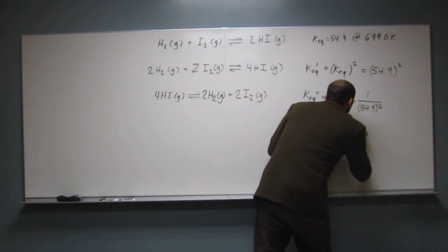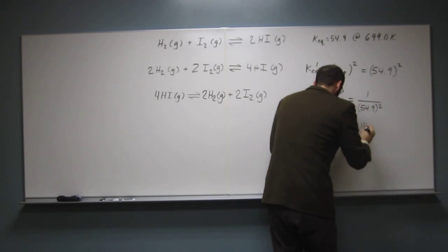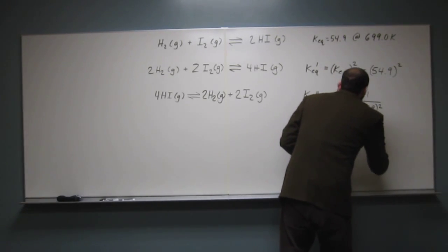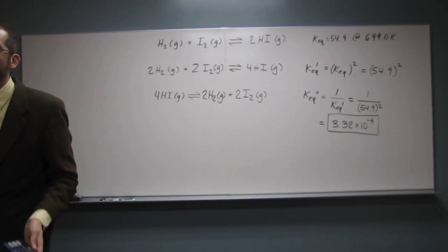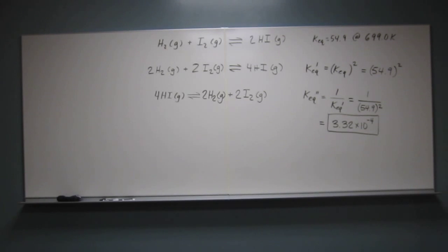3.32 times 10 to the negative 4. And, of course, KEQ doesn't have any units, so that's the new equilibrium constant. Are there any questions about that one? No. Okay, wonderful.